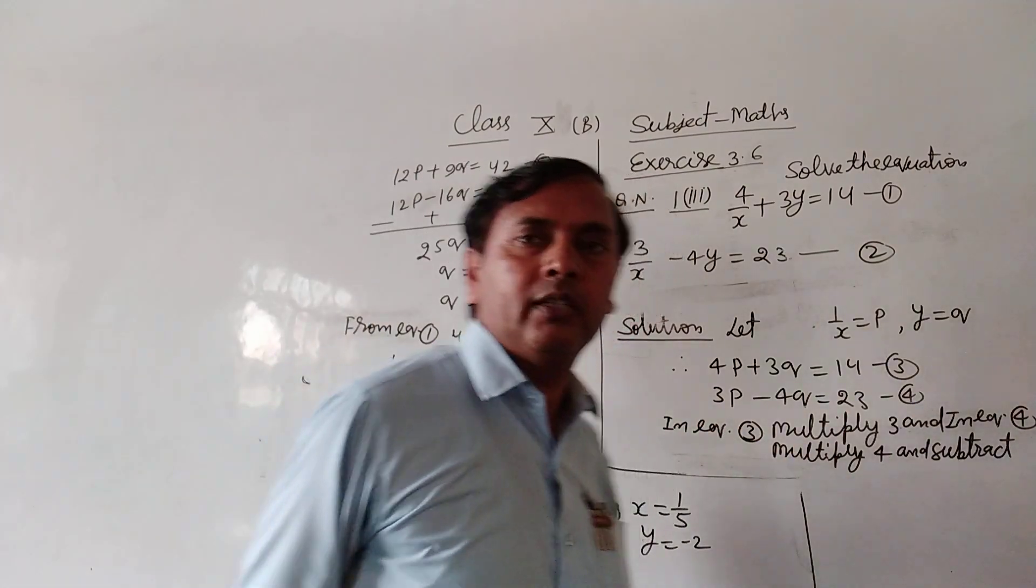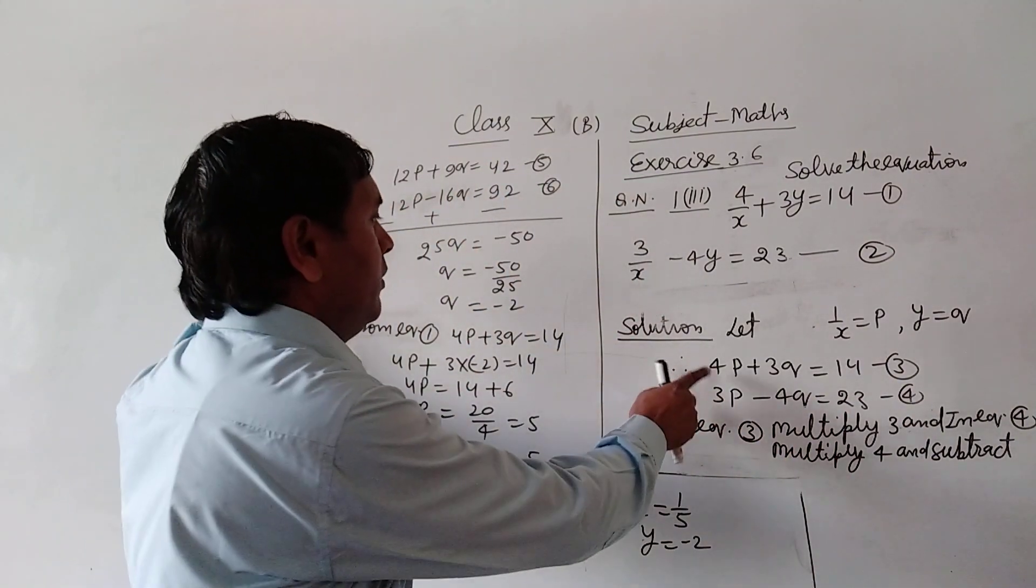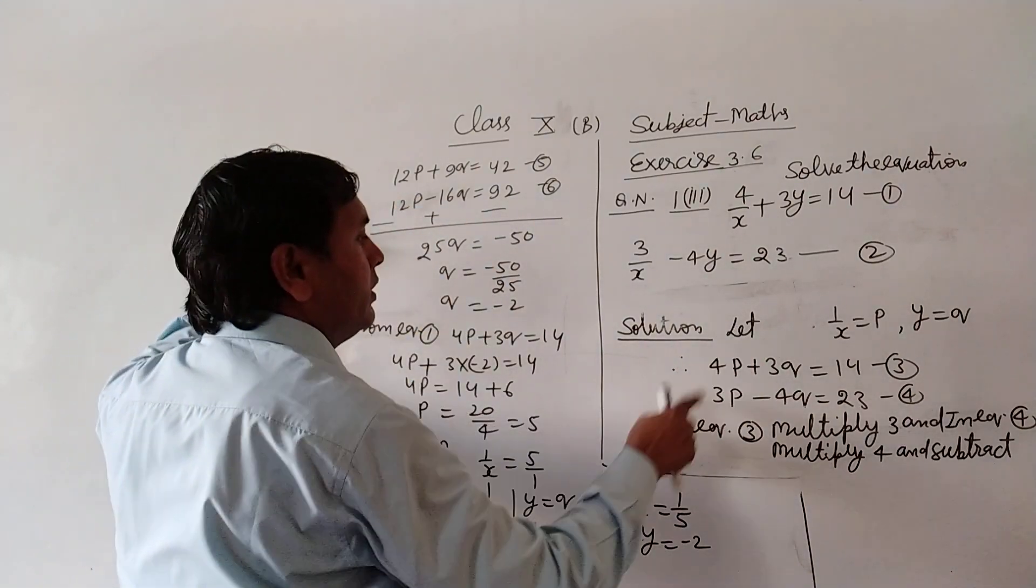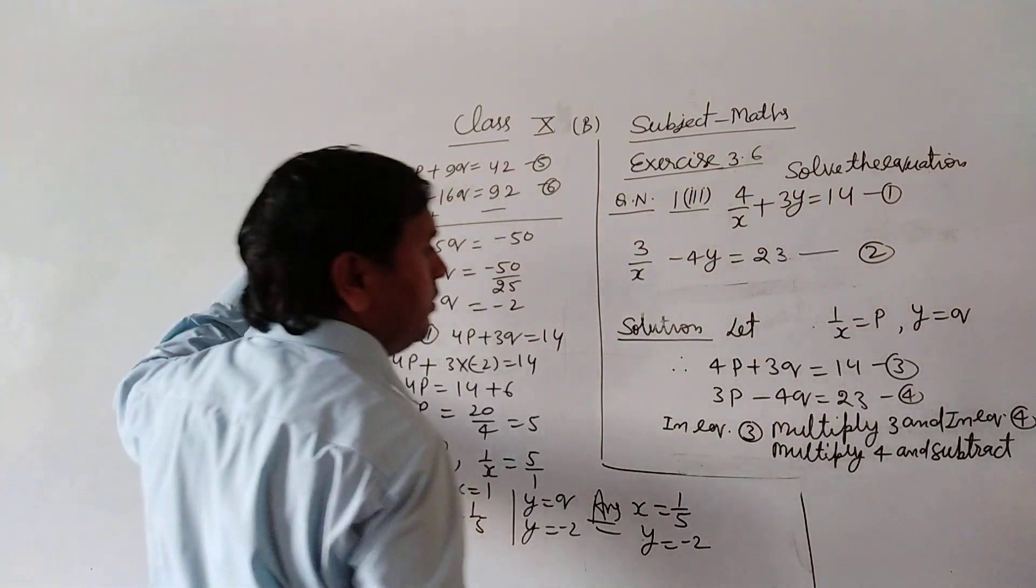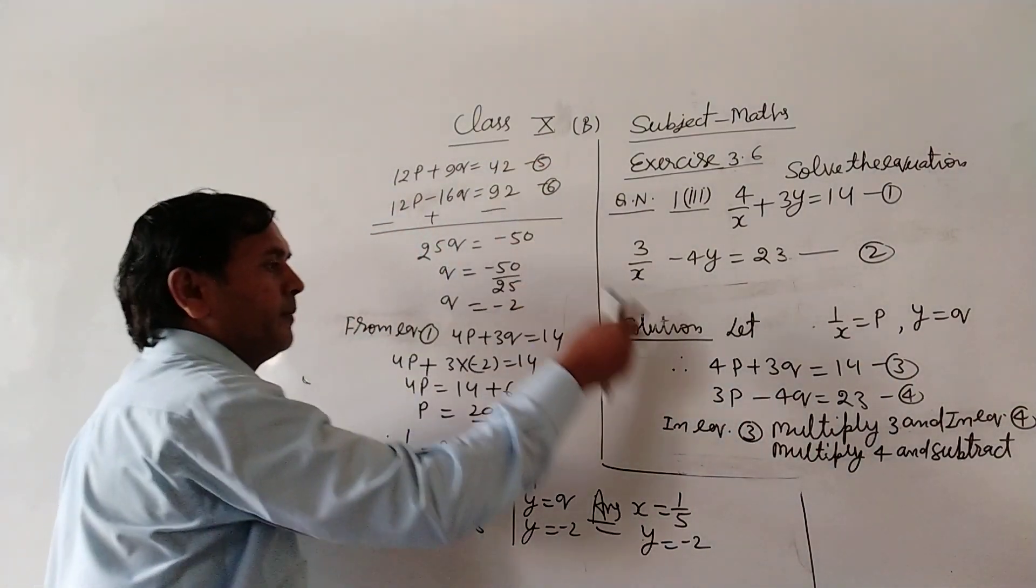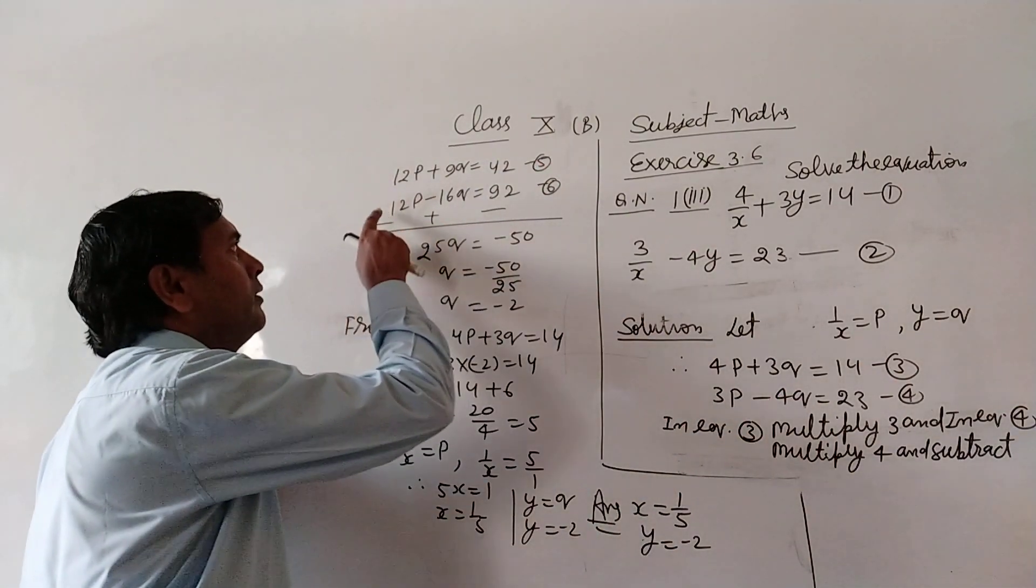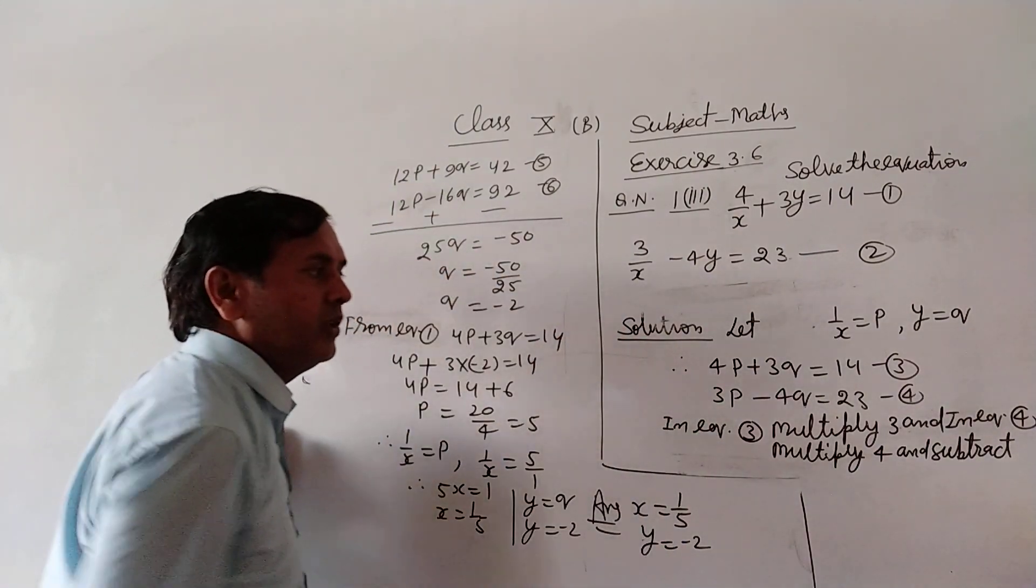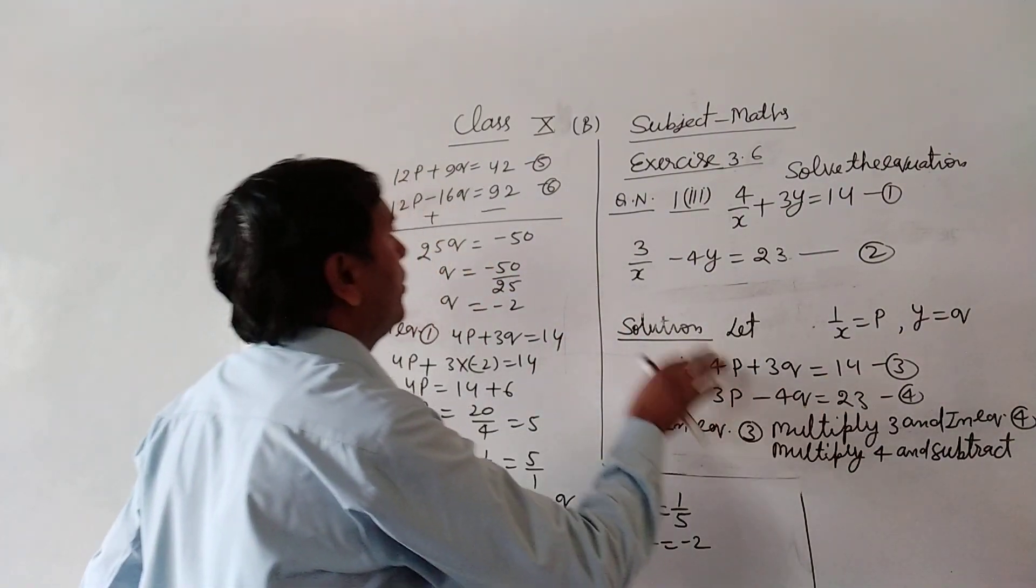And subtract both equations. So 4 into 3 is 12p. 3 into 3 is 9q. 14 into 3 is 42. Equation 4: 3 into 4 is 12p, 4 into 4 is minus 16q, 23 into 4 is 92.